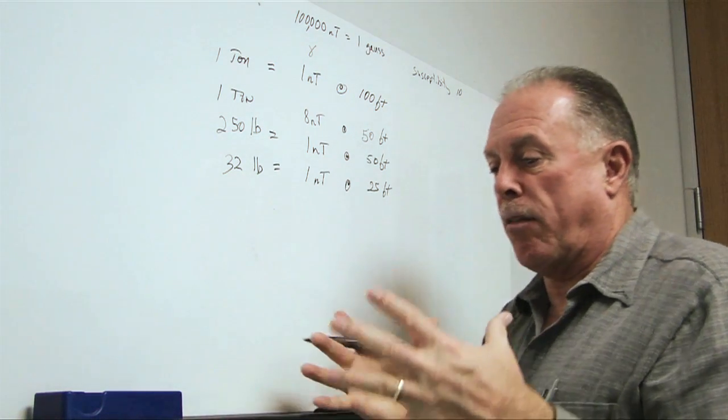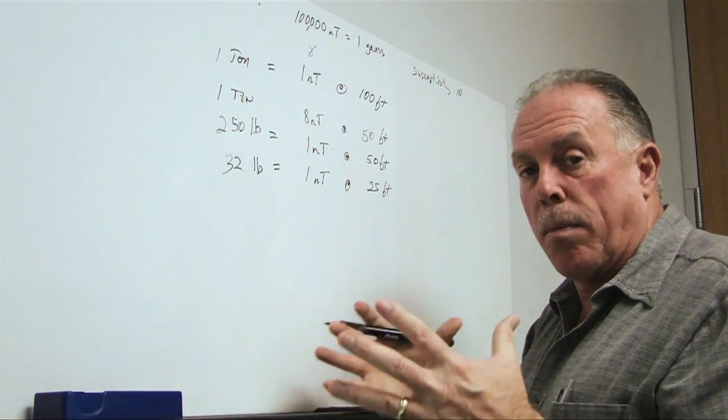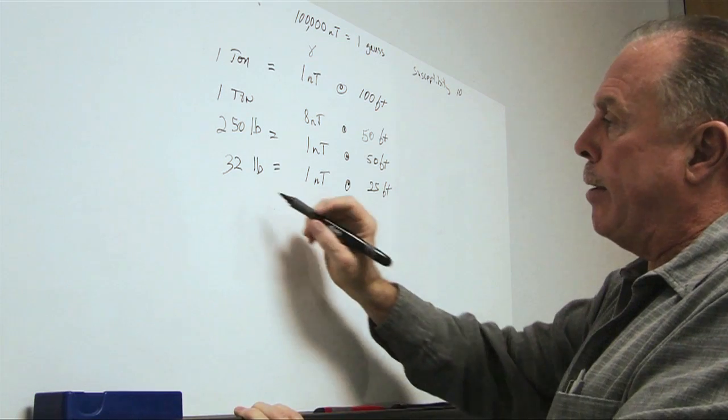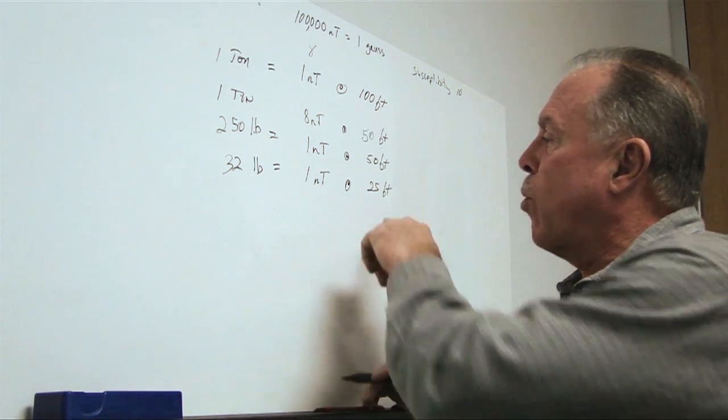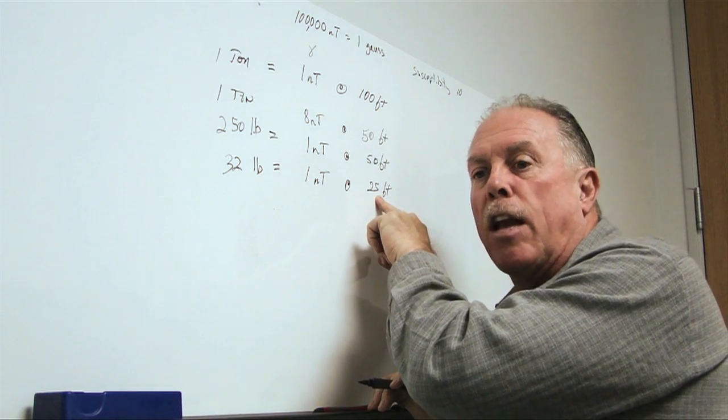So, now you think about something of 32 pounds, that's quite a bit of steel. And in fact, we can see it much, much further, 25 feet, than we could see it with any kind of metal detector.